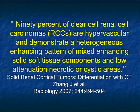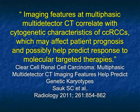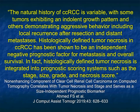The reason it's not 100 percent accurate is that about 10 percent of clear cells, just like the large mass I showed, are not hypervascular, and those are the ones that will be somewhat challenging. Imaging features on multiphasic MDCT also correlate with the cytogenetic characterization of clear cells, which may affect patient prognosis and help predict responses to molecular targeted therapies. A lot of work is going on using radiomics and AI to predict response to therapy based on enhancement, since enhancement correlates well with the genetic makeup of tumors.